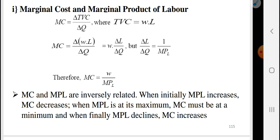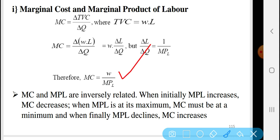In production, if you increase or decrease the cost of labor, marginal cost equals wage over marginal product of labor. So there is an inverse relation between marginal cost and marginal product of labor.